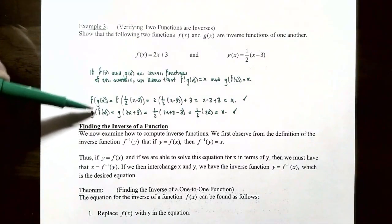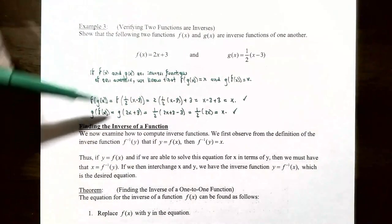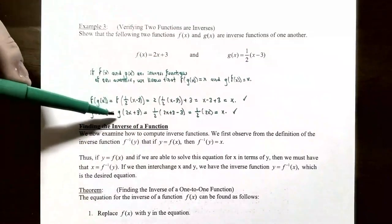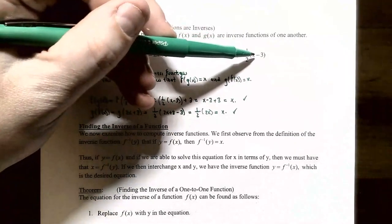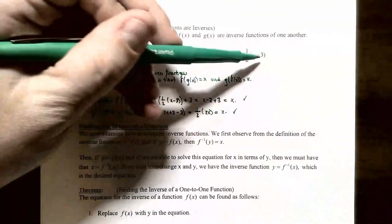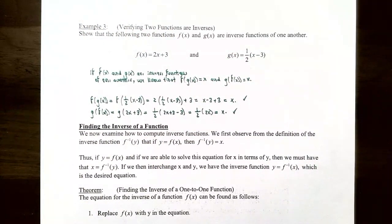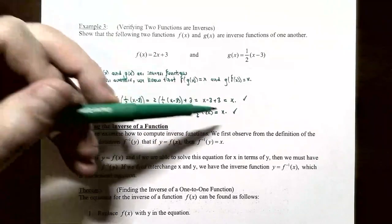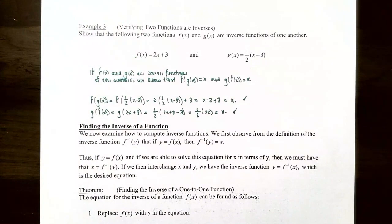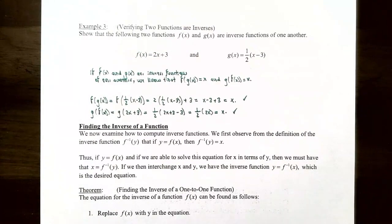Now let's check g(f(x)): f(x) = 2x + 3 is the inside function, substituted into g: ½(2x + 3 − 3) = ½(2x) = x. Again, the inverse operations undo each other — plus 3 and minus 3 cancel, and multiplying by 2 and by ½ cancel. So g ∘ f(x) = x, confirming f(x) and g(x) are inverse functions of one another. This is a good place to stop — we covered one-to-one functions, the definition of an inverse function, and how to verify whether two functions are inverses. See you in the next video on how to find the inverse of a function.